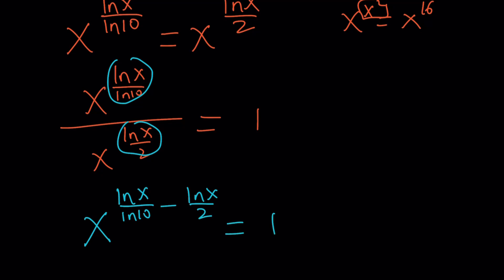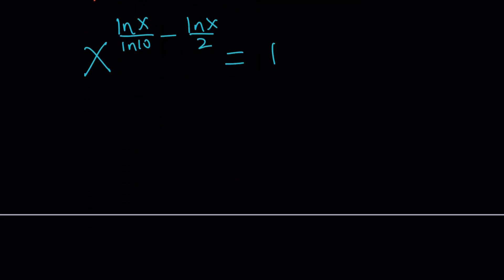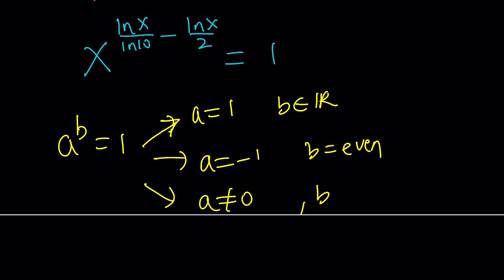And then if x is real, then we have three cases. What are they? First case is if you think about a to the b equals 1, we can safely say that if a is 1 and b is a real number, as long as it's well-defined, we're good. And then or a can be negative 1, but then in this case b must be an even integer. Or a different from 0 and b is equal to 0. Cool. Now, we're going to look at each case. Let's call them number 1, number 2, and number 3.